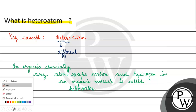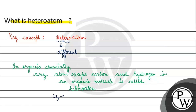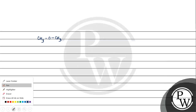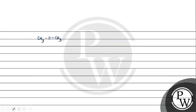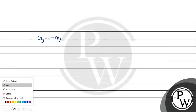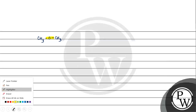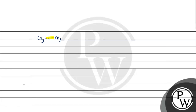For example, CH3-CH3: we have no hetero atom present. But if we have CH3-O-CH3, there is a hetero atom present — oxygen.